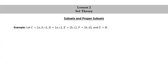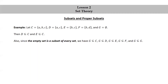Example: let C be the set consisting of a, b, and c; D the set consisting of a and c; E the set consisting of b and c; F the set consisting of b and d; and G the empty set. Then D is a subset of C and E is a subset of C. Also, since the empty set is a subset of every set, we have G a subset of C, G a subset of D, G a subset of E, G a subset of F, and G a subset of G itself. Every set is a subset of itself, so C is a subset of C, D is a subset of D, E is a subset of E, and F is a subset of F.